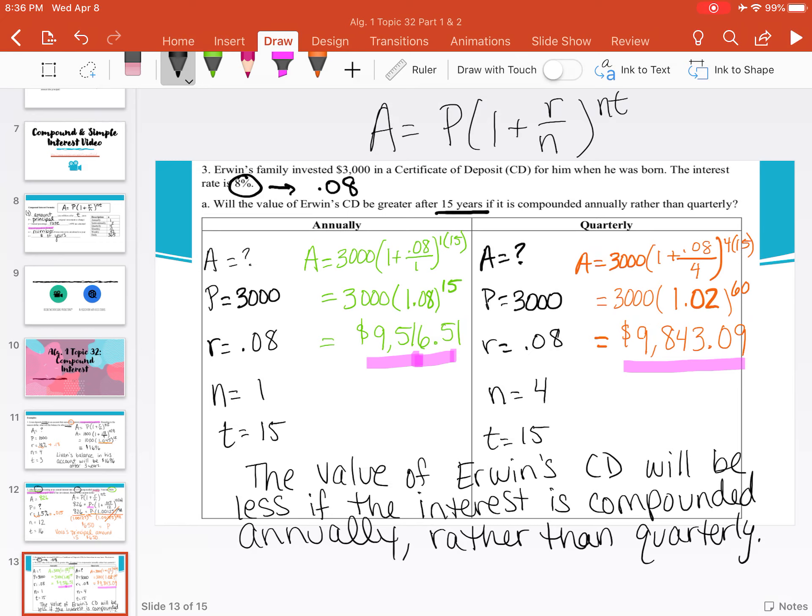And we know that because the actual value we ended up with was a little less than $300 less if we compounded it annually versus quarterly. So what we've noticed here is if we have the same numbers for our principal, rate, and time, but the only thing that's different is how often it's compounded, the more frequently it's compounded, the higher our final amount will be. That can be a good thing if you're dealing with what you will be receiving, but not so good if you have to deal with what you have to owe.